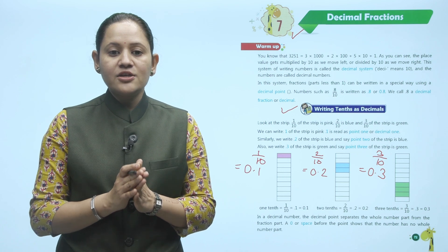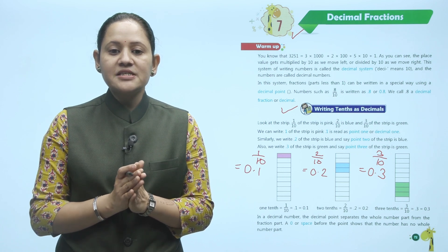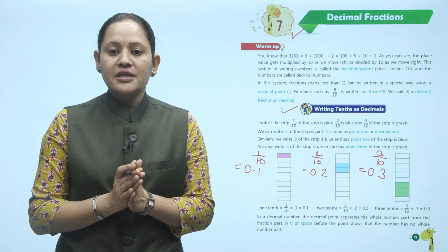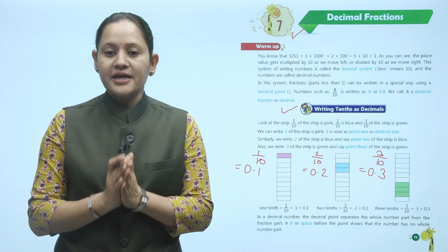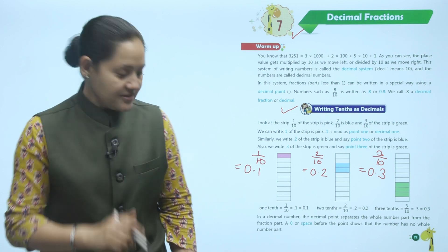A zero or a space before the decimal point shows that the number has no whole number part. Understand?